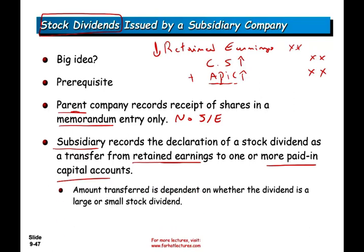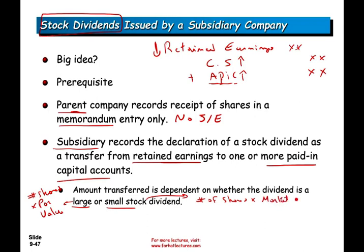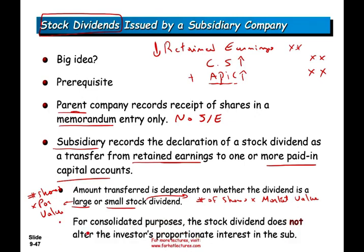The amount transferred depends on whether it's a large or a small stock dividend. If it's a large stock dividend, we capitalize the number of shares times the par value. If it's a small stock dividend, we capitalize number of shares times the market value per share. This is a review from Chapter 16 intermediate accounting. For consolidated purposes, when we consolidate, the stock dividend does not alter the investor's proportionate interest in the subsidiary — so it doesn't really make any difference.